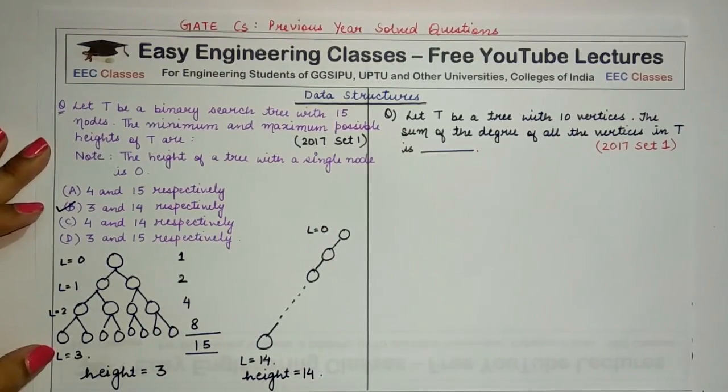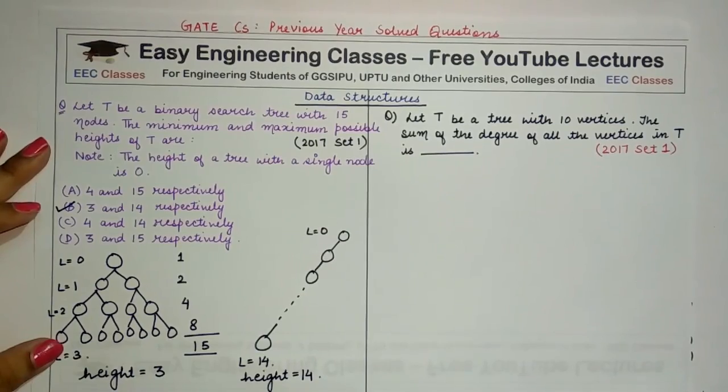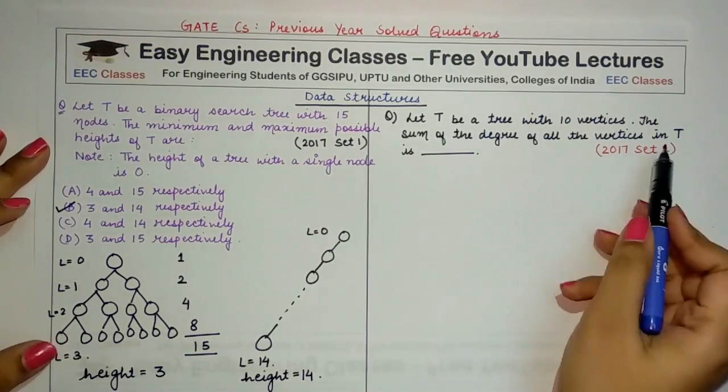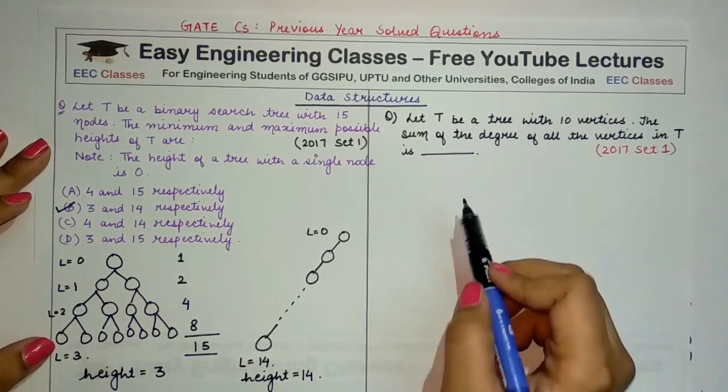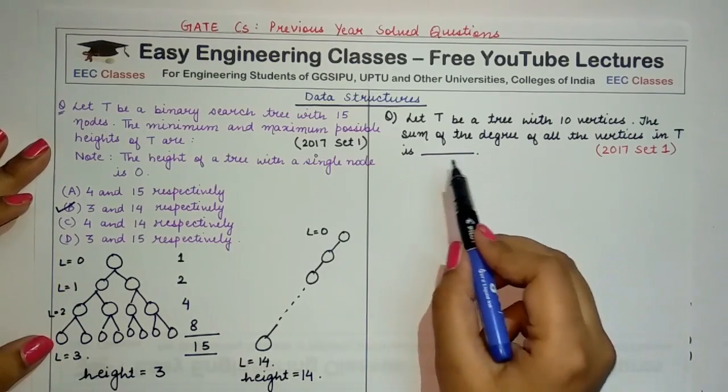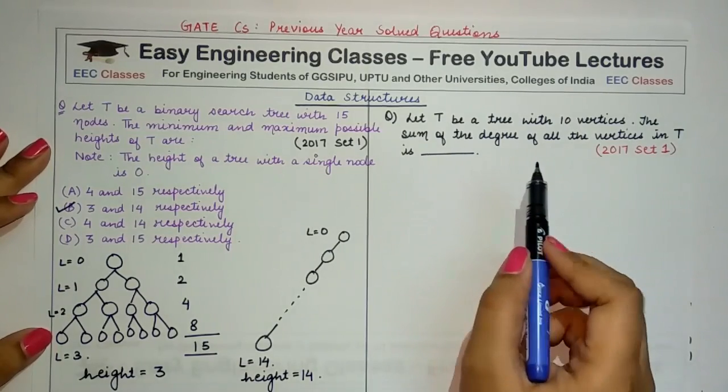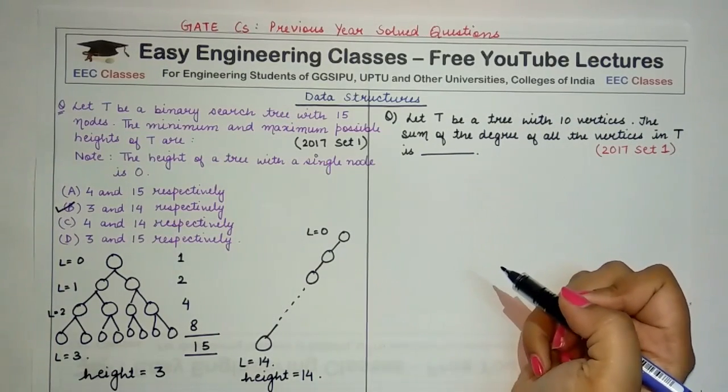Now coming to the next question: let T be a tree with 10 vertices. The sum of the degree of all the vertices in T is... Now this is the type of question in which you are not given the options and you have to find the correct answer and fill the blank with it.